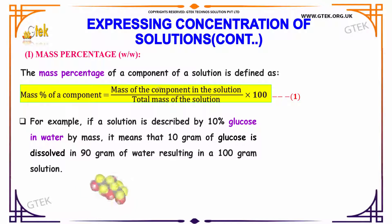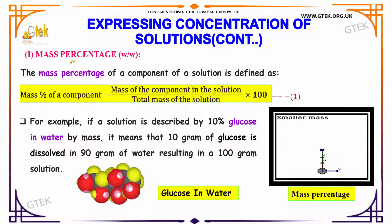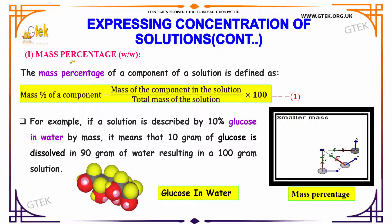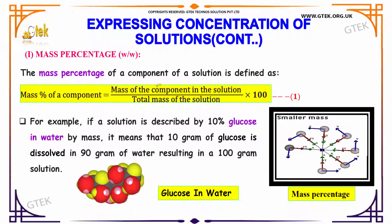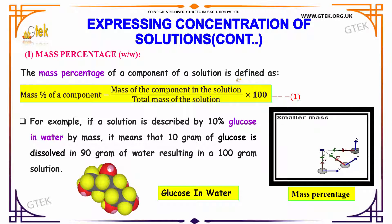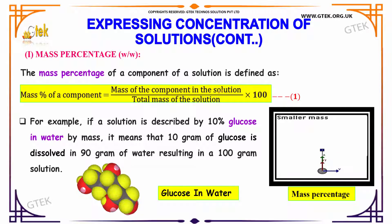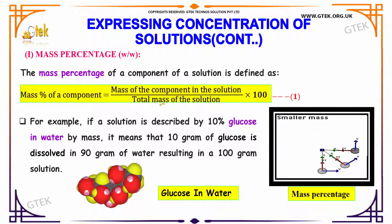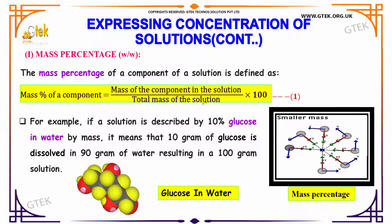The first one I am going to talk about is the mass percentage. The mass percentage of a component of a solution is defined as: mass of the component in the solution divided by total mass of the solution, multiplied by 100.